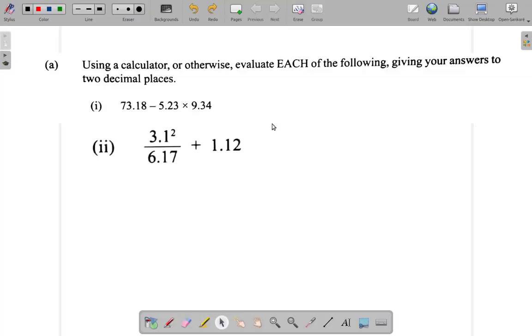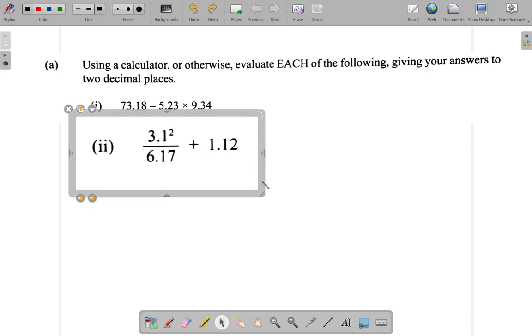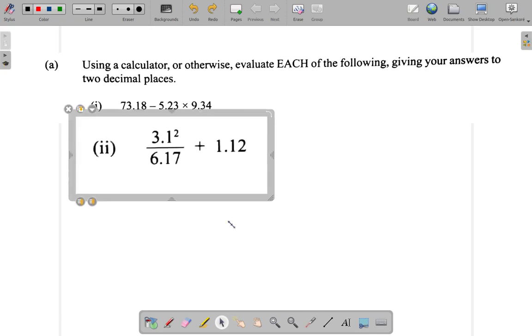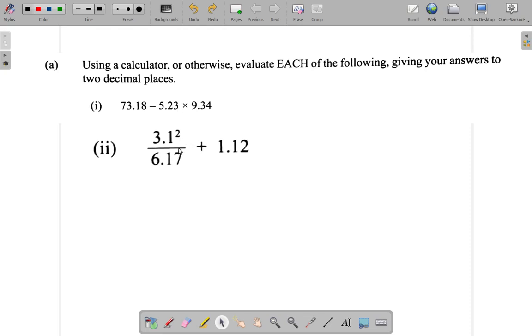We've already worked out part one. Let's look at part two of question 1a. Now you're asked to work this out: 3.1² over 6.17 plus 1.12. If you write this out without any fractions, it would be 3.1 squared divided by 6.17 in brackets, plus 1.12.